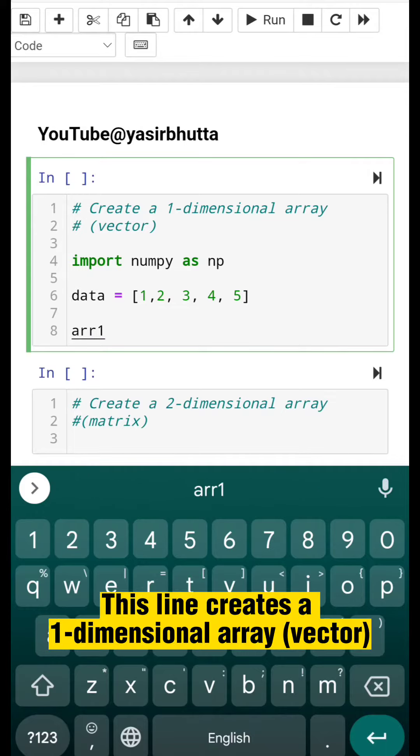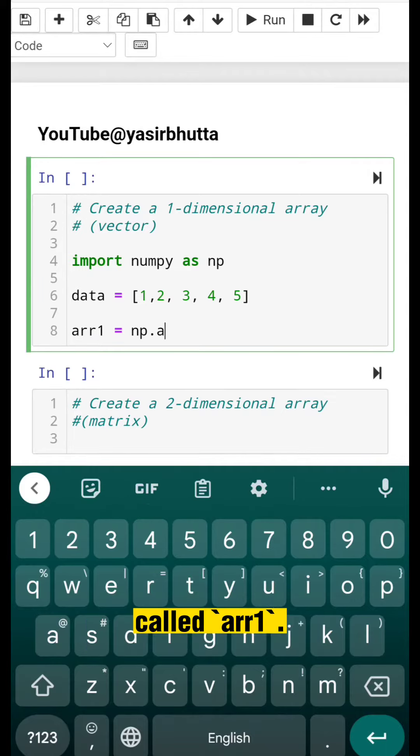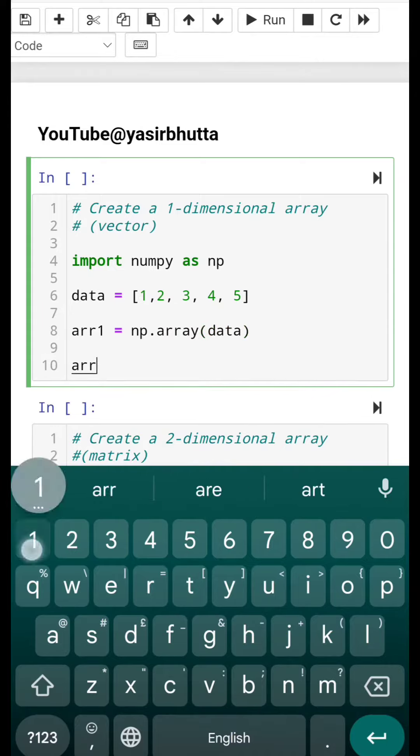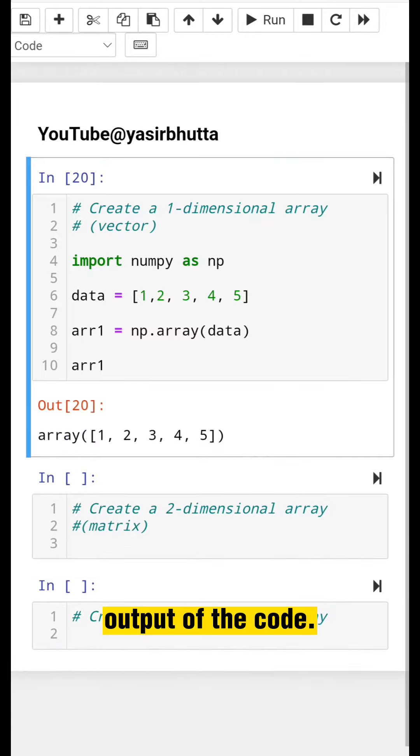This line creates a one-dimensional array vector called arr1. Output of the code.